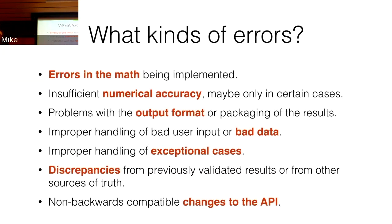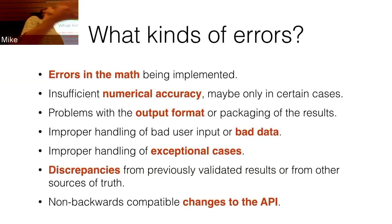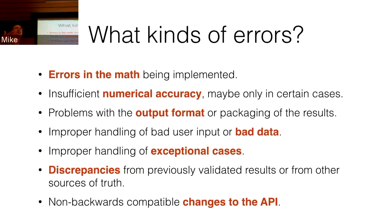Output format: we output things and then read them back in a lot of times, so make sure all of that works properly with different file formats. Bad data is something that's hard to get but worth testing — what happens if the input has NaNs in it, or if something you assumed was positive has negative values due to noise or user error. Exceptional cases like singular or near-singular matrices are also worth testing, since ill-conditioned matrices can cause problems.